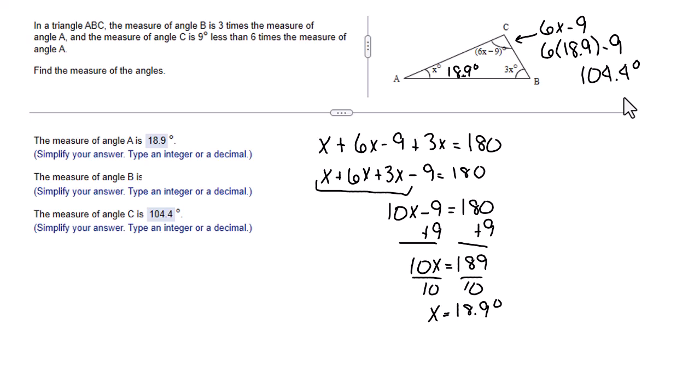Now to figure out angle B, we could do one of two things. We could take 180 degrees minus 18.9 minus 104.4. And that will give us angle B.